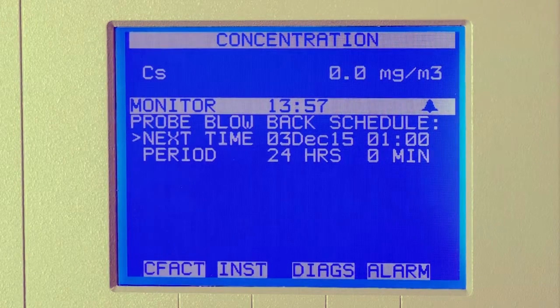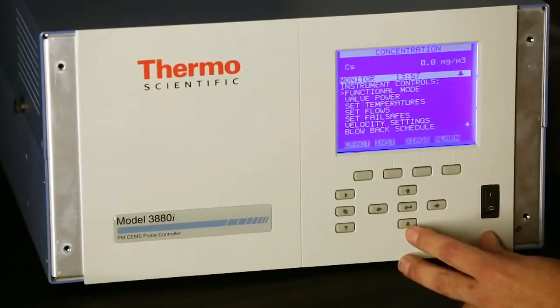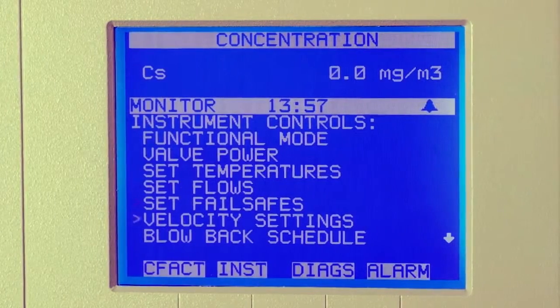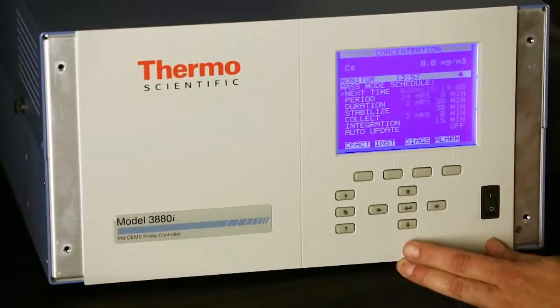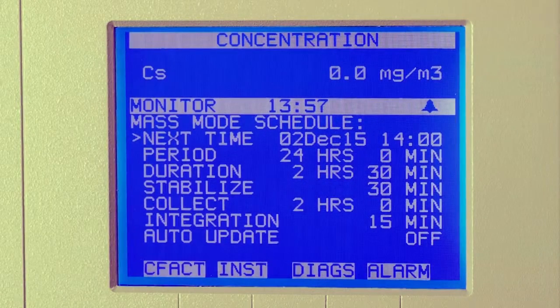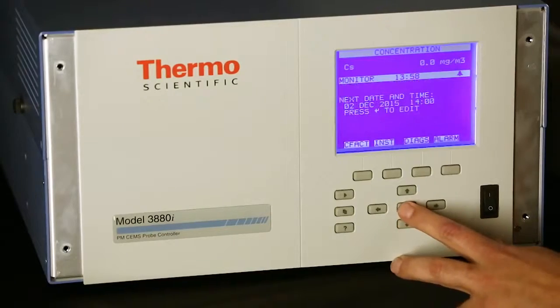Now go back to run and then to instrument controls. Scroll down to mass mode schedule and hit enter. This is set up for 1200 hours. The next time will be tomorrow. Press enter to edit.